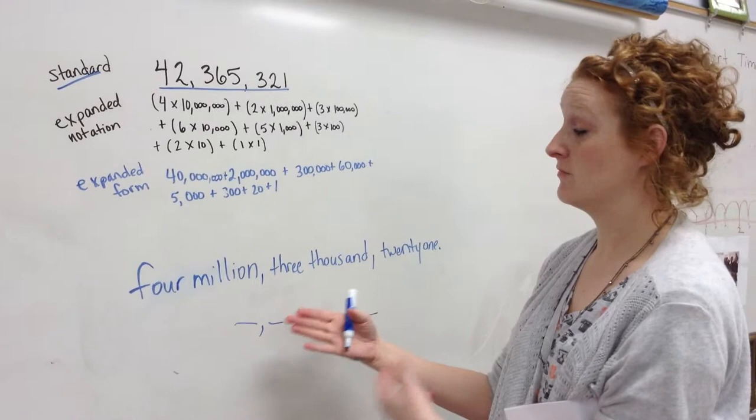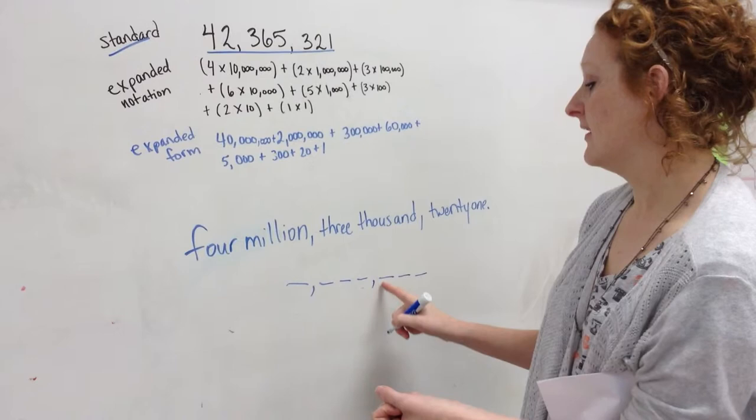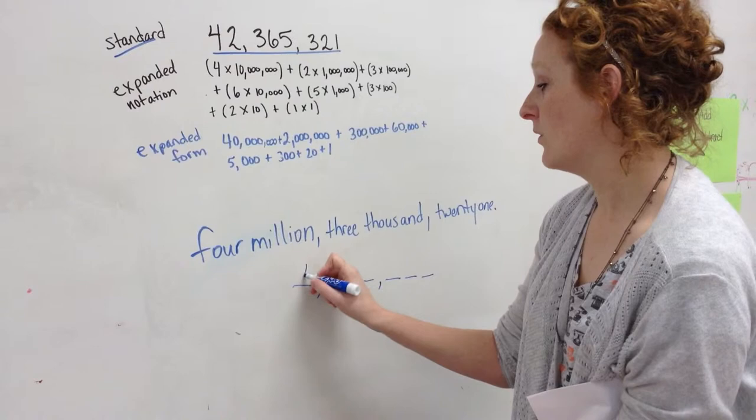Now I'm going to use this number and transfer it down here into numerical form. So I have four million - ones, tens, hundreds, comma, thousands, ten thousands, hundred thousands, comma, millions - four million.